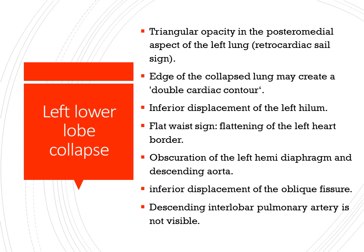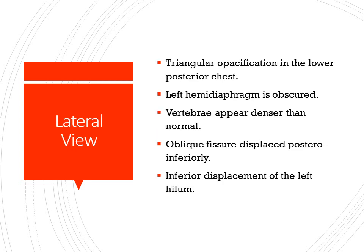Left lower lobe collapse shows a triangular opacity in the posterior medial sternal aspect of the left lobe. This is called the retrocardiac sail sign, and the edge of the collapsed lung may create a double cardiac contour. There will be inferior displacement of the left hilum and flattening of the left heart border, known as the flat waist sign. The left hemidiaphragm border is obscured, inferior displacement of the oblique fissure may be seen, and the descending interlobar pulmonary artery will not be visible. In the lateral view, a triangular opacity in the lower posterior chest, the left hemidiaphragm is obscured, vertebrae appear denser than normal, and the oblique fissure is displaced posteriorly with inferior displacement of the left hilum.